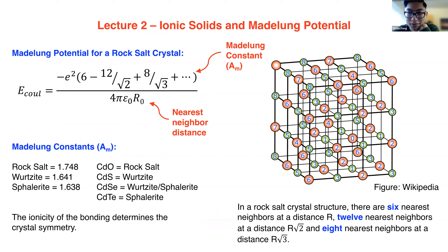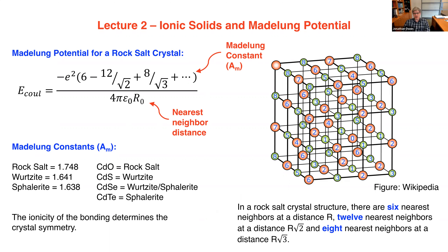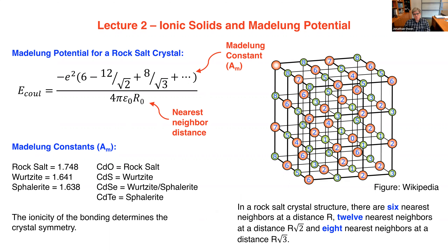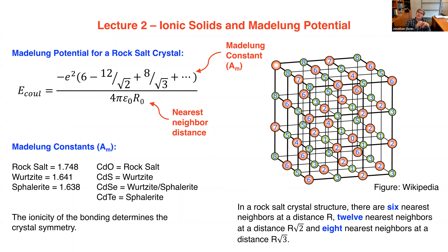Student question: How big does the crystal have to be before you can basically stop ignoring further terms in the Madelung sum? The answer is that beyond the fourth or fifth nearest neighbor, it tends toward zero, though the exact behavior is uncertain. A crystal of about 1,000 atoms is less than 10 atoms across if spherical, and once you get beyond 1,000 atoms, it basically looks like the bulk — at least at the middle of the crystal.